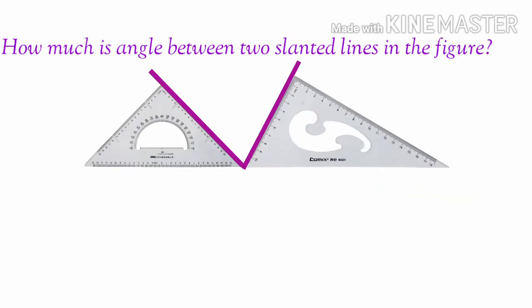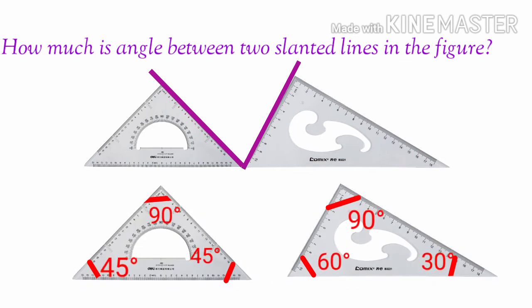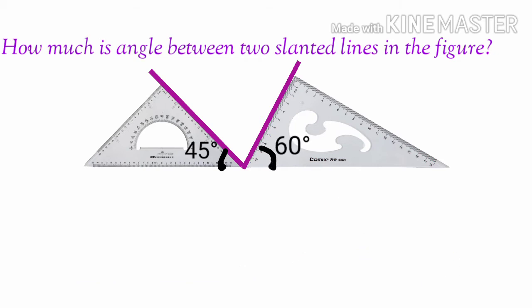How much is the angle between two slanted lines in the figure? In the figure, there are two slanted squares representing the same line. The slanted squares are equal to the same angle — this is something we learned last year. This angle is 45 degrees and this angle is 60 degrees.